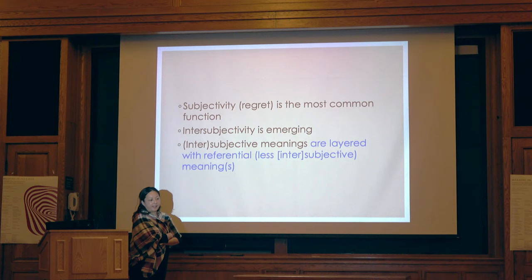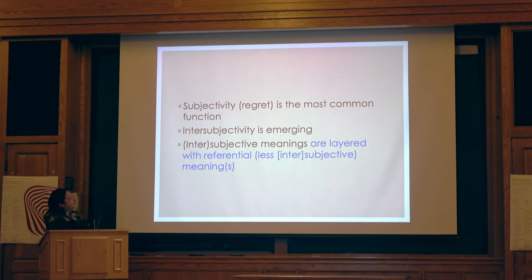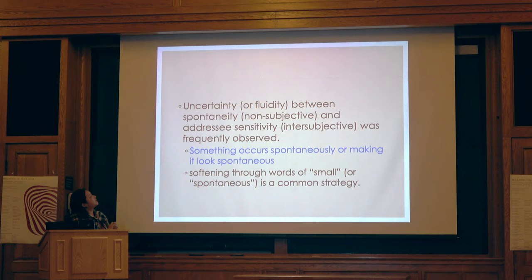Some key findings: subjectivity — regret — is the most common function. Inter-subjectivity is emerging. Inter-subjective means are layered with referential, less inter-subjective means. And the fluidity between spontaneity and addressee sensitivity in the subjective means was frequently observed.